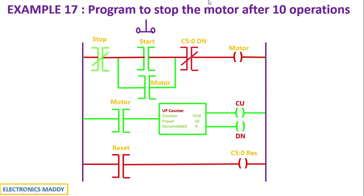That is exactly according to our requirement. So this goes to low state, the up counter also goes to low state, and the process has to be started again. You also have to provide a provision for the reset button — this is very important. At times you might have to stop the process for some reason in the industries, so this button is always required so that the counter can be reset and the process can be repeated again.